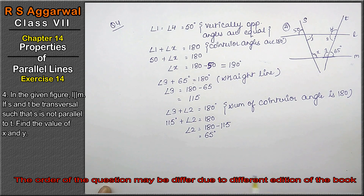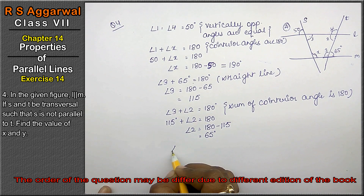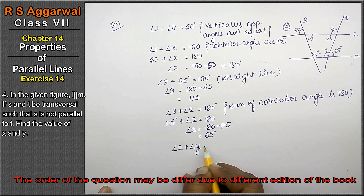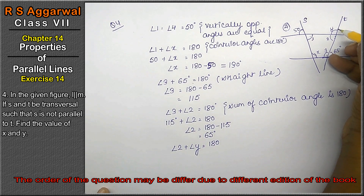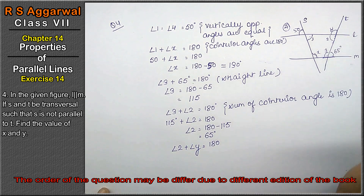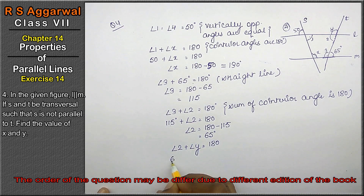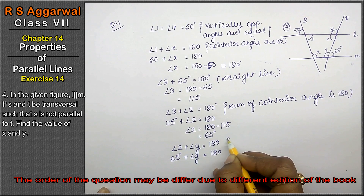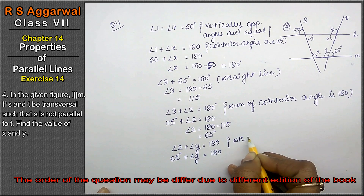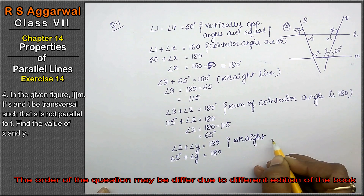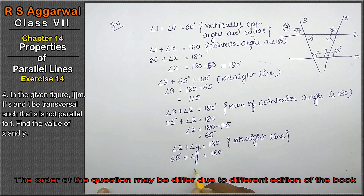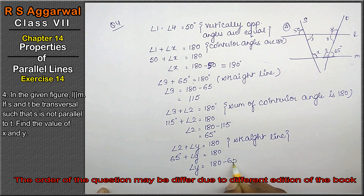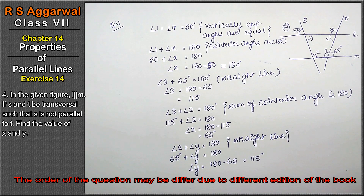Now, angle 2 plus angle y equals 180 degrees, because they form a straight line. Substituting: 65 plus angle y equals 180. Therefore angle y equals 180 - 65 = 115 degrees. That is our answer.